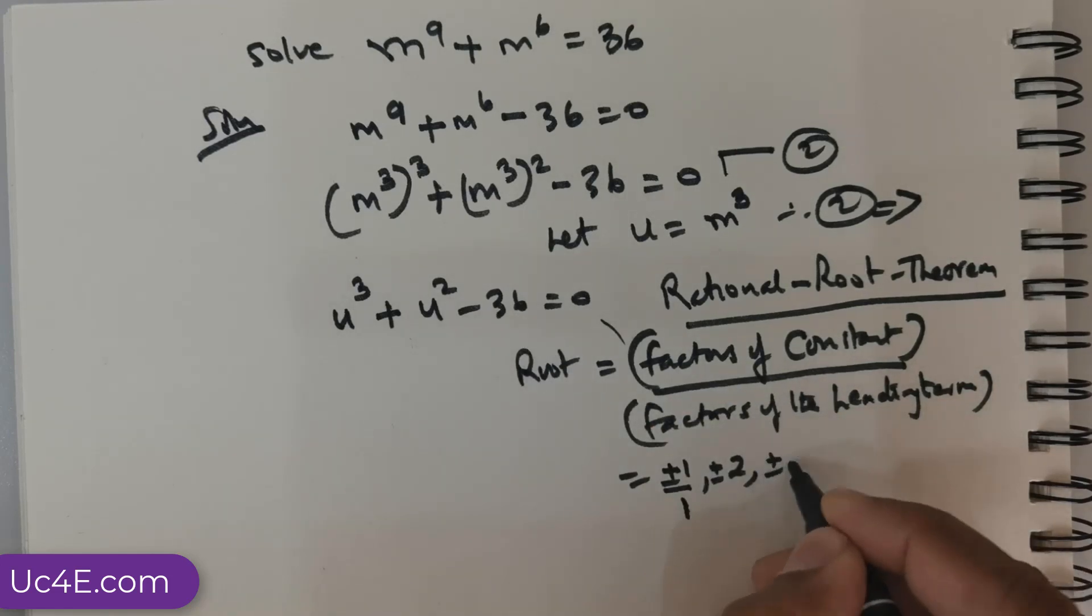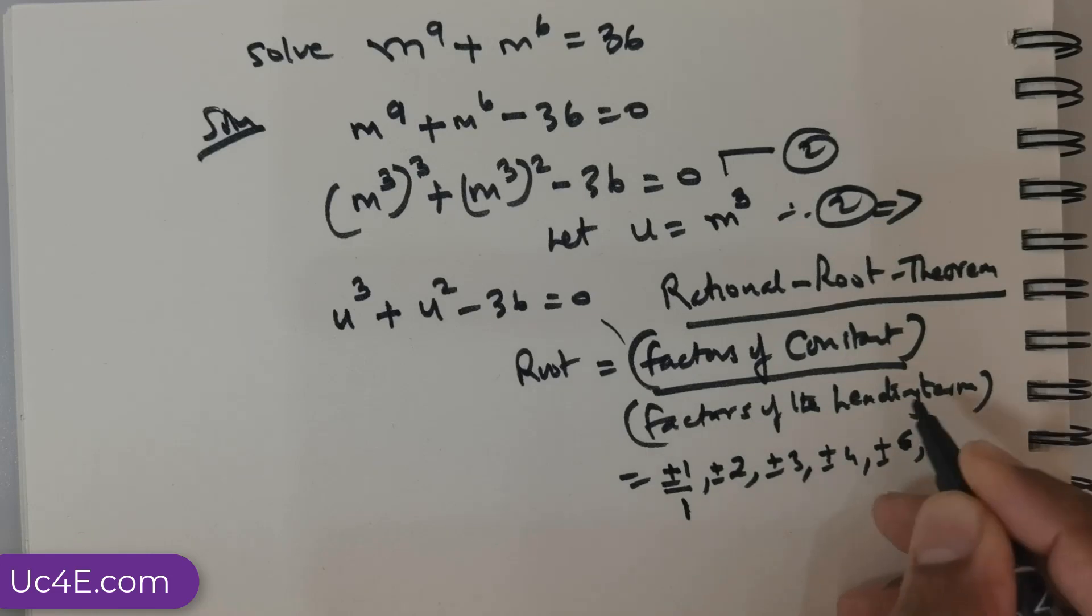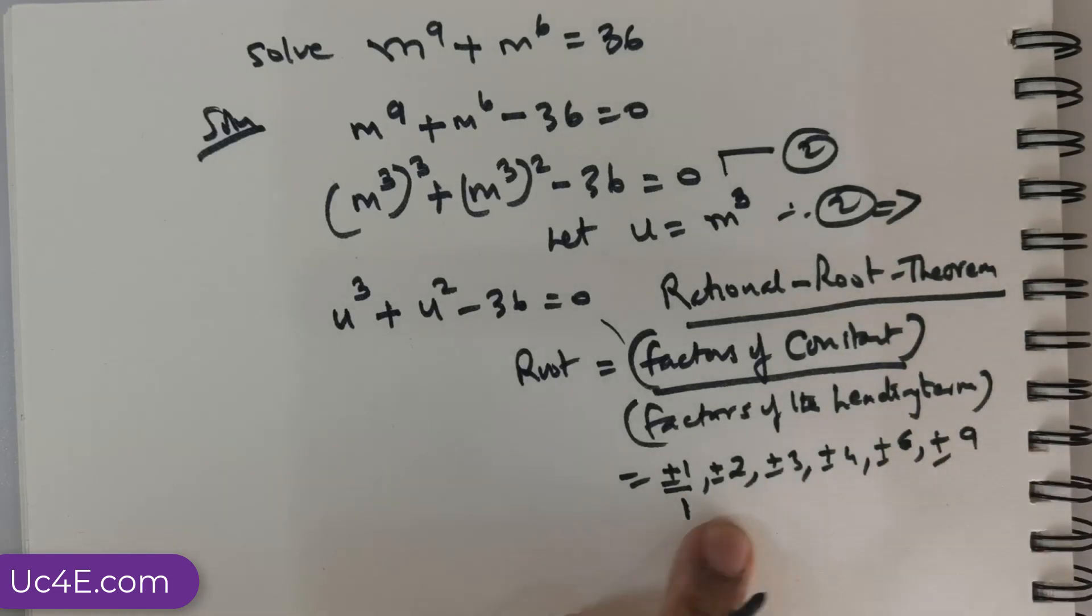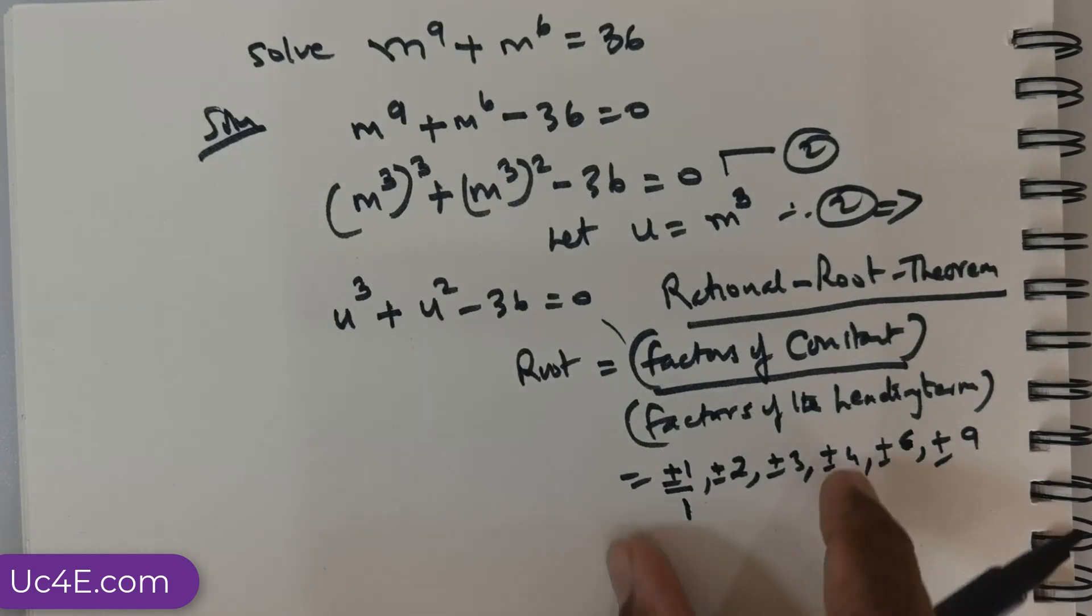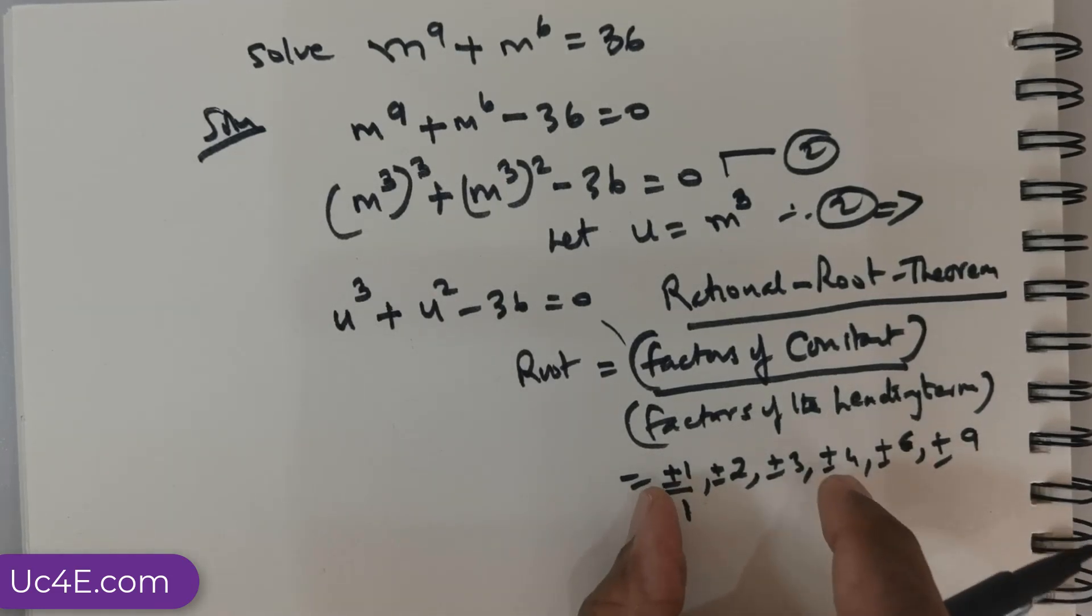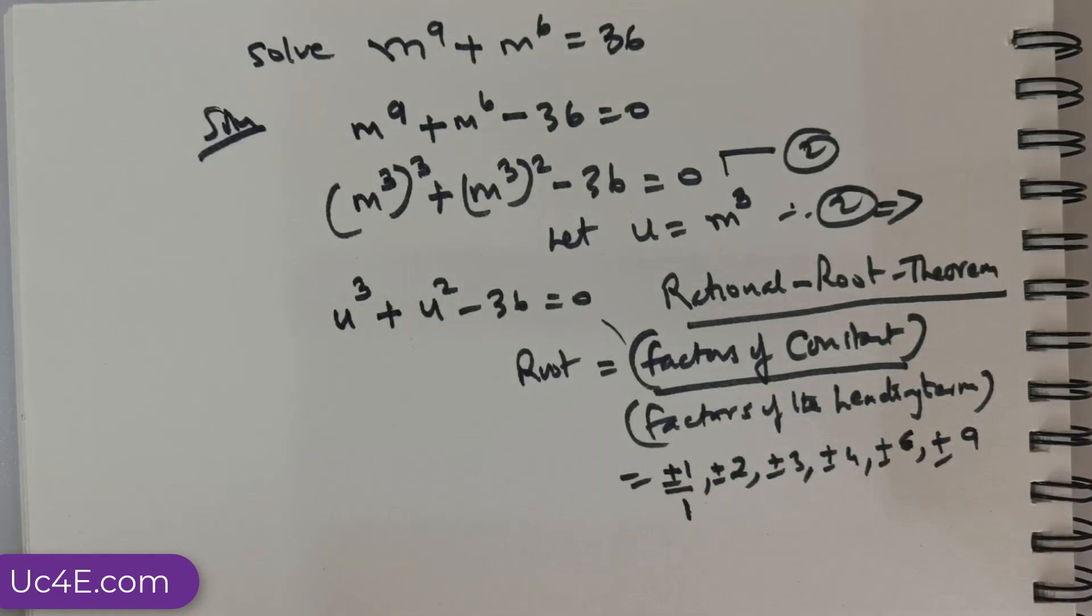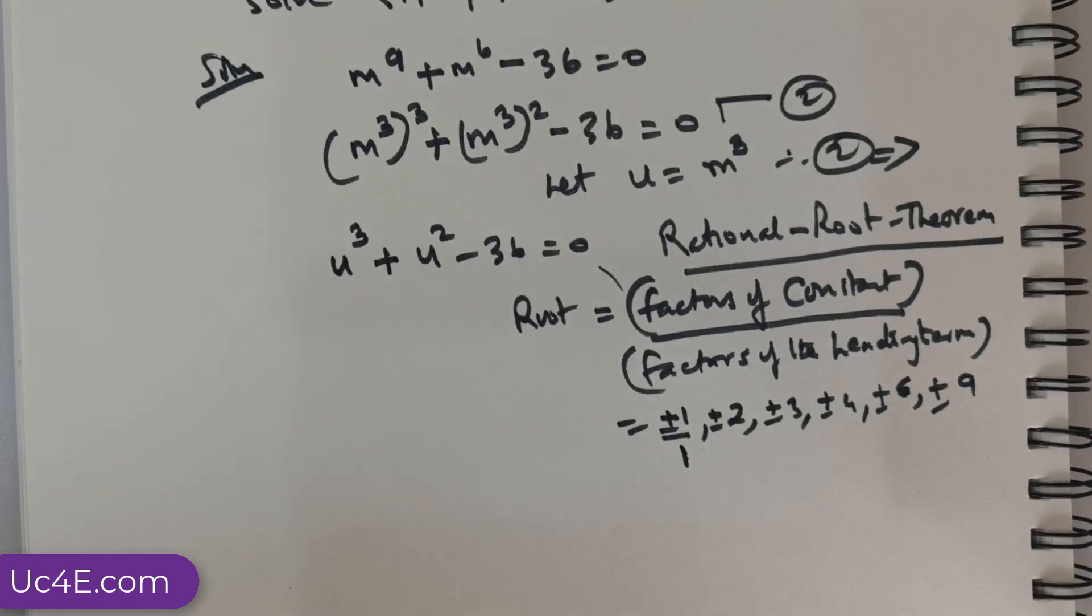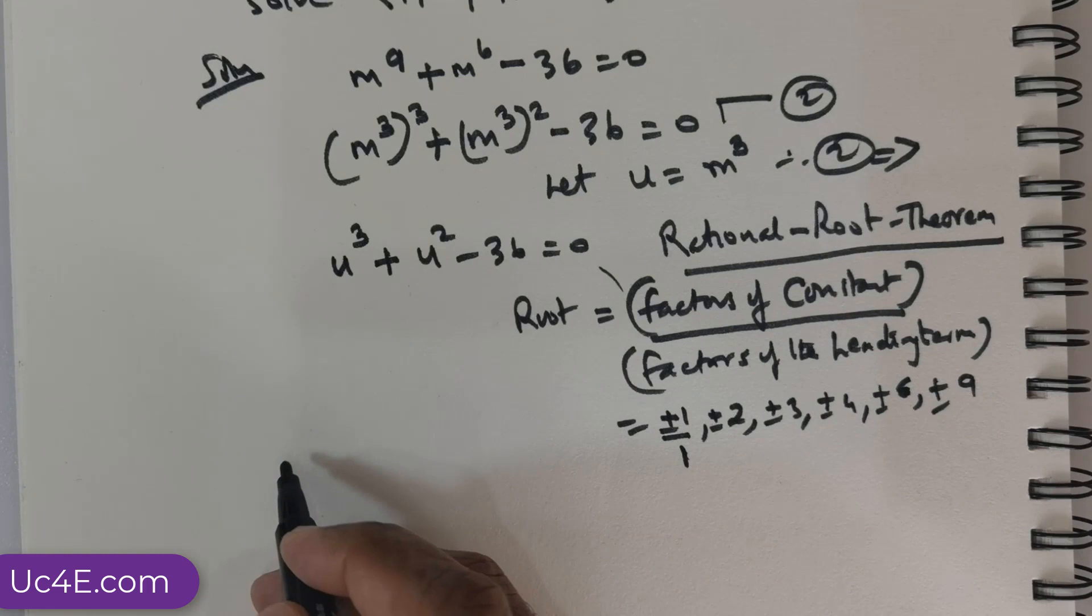And there is going to be plus or minus 3, plus or minus 4, plus or minus 6, right? And plus or minus 9 and so on and so forth. It goes on. You can list out all the factors. But for me, I am sure I can zero in the root just by picking up these values. So, I do not have to go on writing. So, that is one of the ways you can also find out which would be the factor.